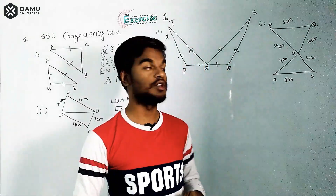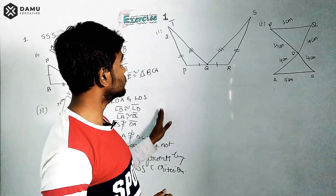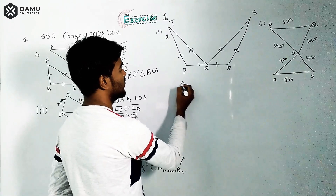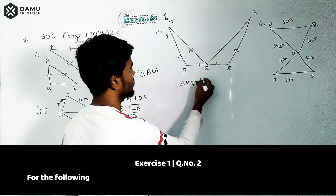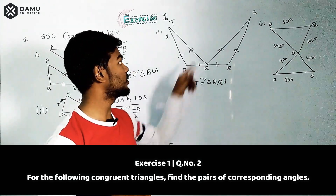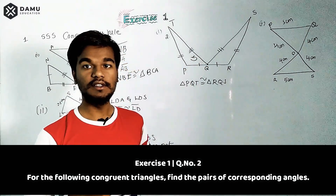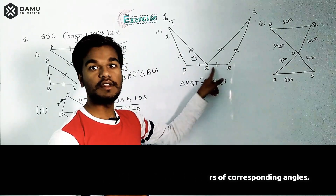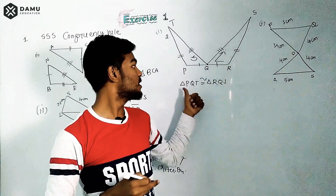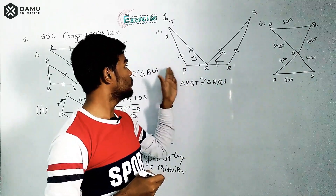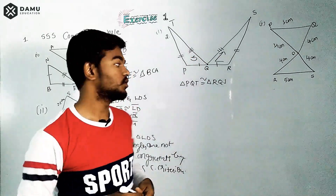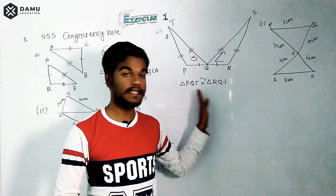LD is a common side. Now for the second question, we need to identify congruent triangles and find the angles. Triangle PQT is congruent to triangle RQS. When writing congruent triangles, start from one vertex and follow the direction to the third vertex — you should not reverse the order, such as writing QP instead of PQ.